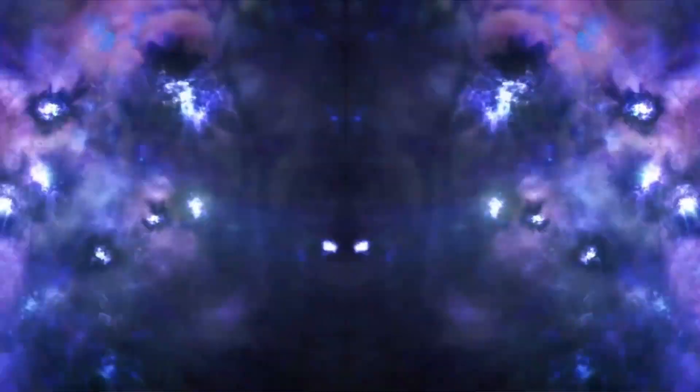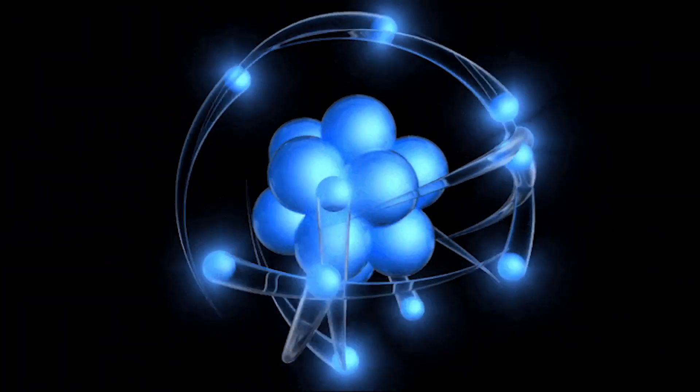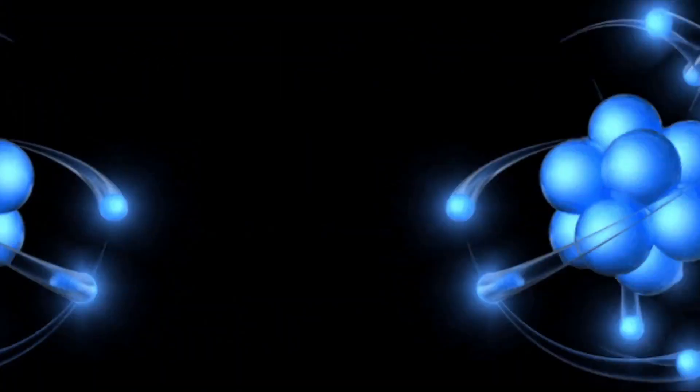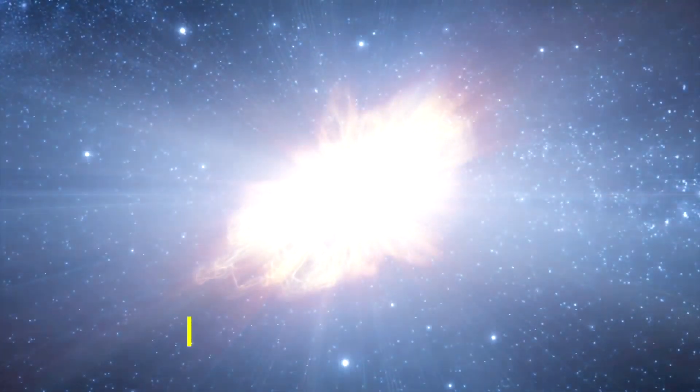Supernovas are so powerful that they create new atomic nuclei. As a massive star collapses, it produces a shock wave that can induce fusion reactions in the star's outer shell. These fusion reactions create new atomic nuclei in a process called nucleosynthesis.